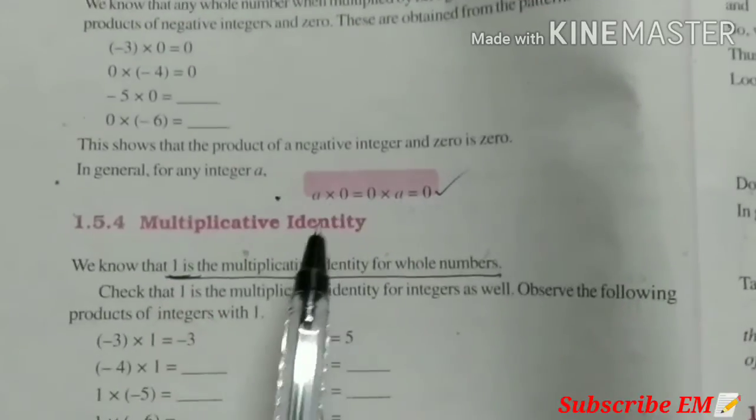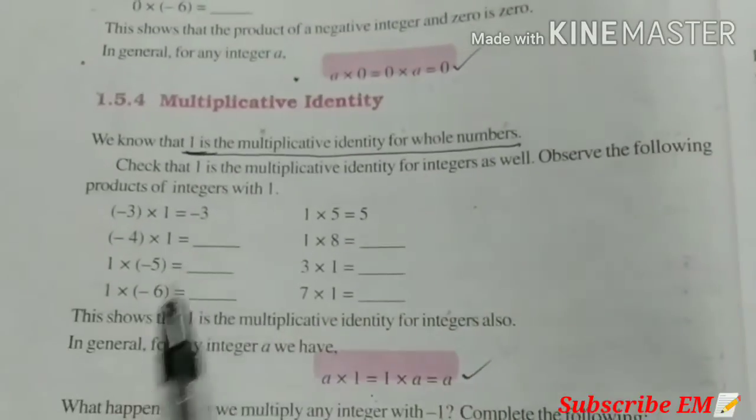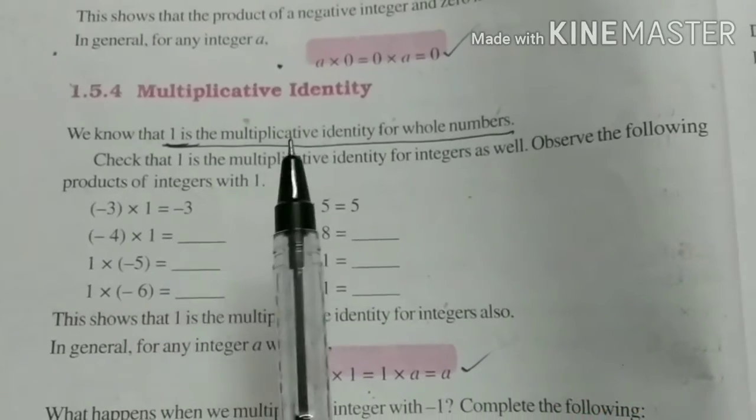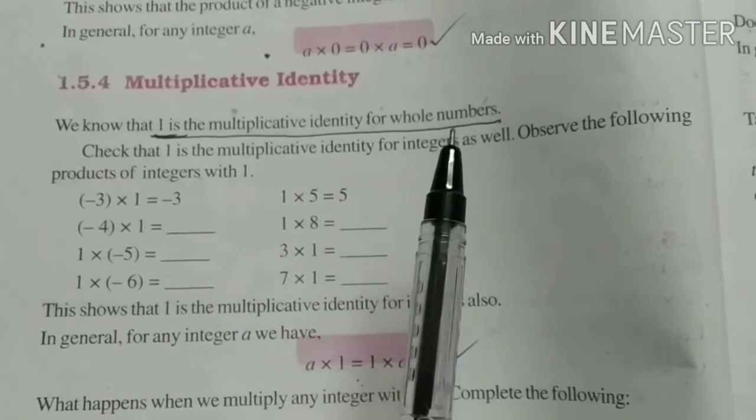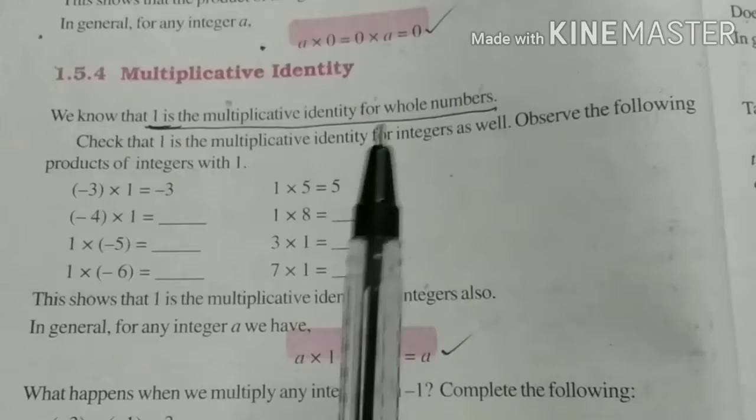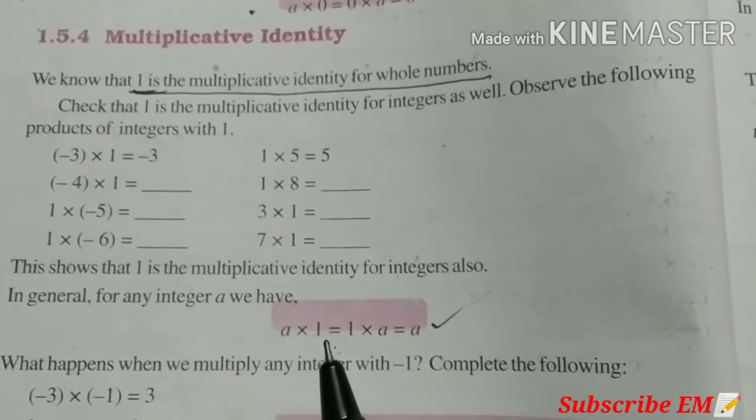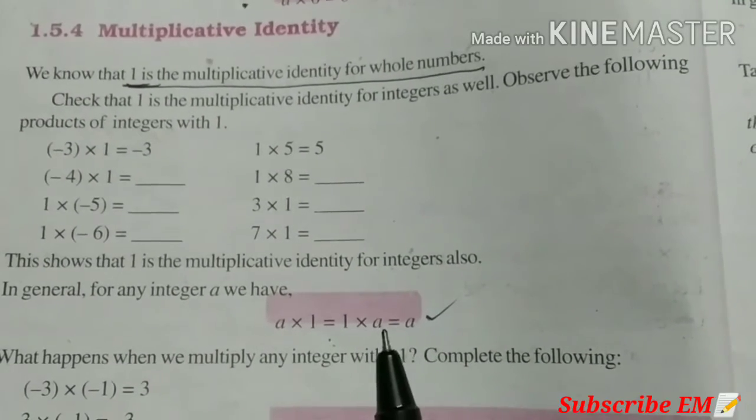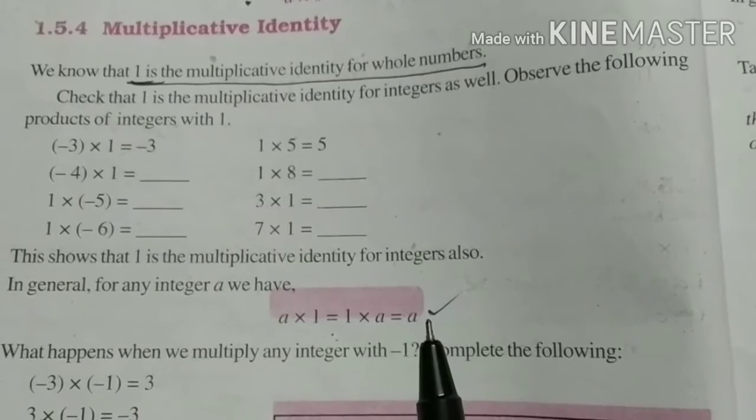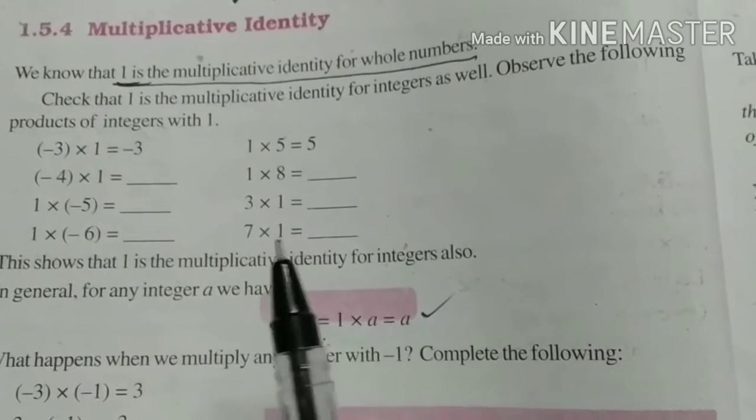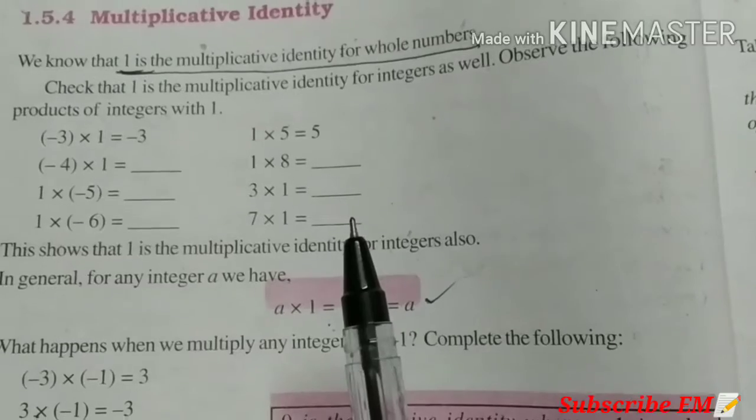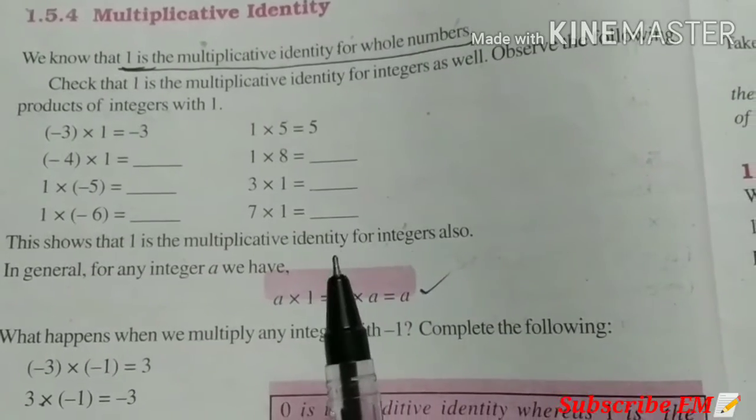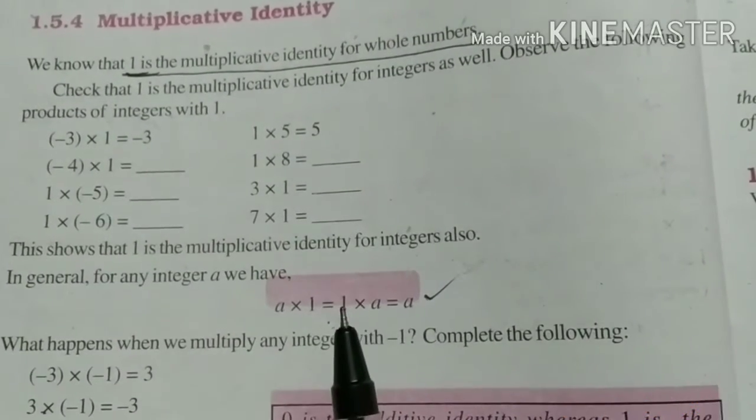Fourth is multiplicative identity. 1 is the multiplicative identity for whole numbers. A into 1 is equal to 1 into A is equal to A. You can take any example. 7 into 1 is 7. So, for multiplication, identity is 1.